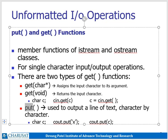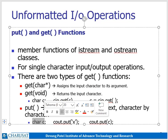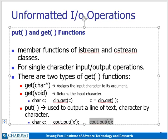Similarly, we can put one character on the output screen using the put function. Using the same variable c, we can display output using the line cout.put(c), or we can directly put some character in the put function as well. The example is highlighted here.